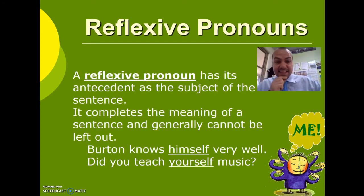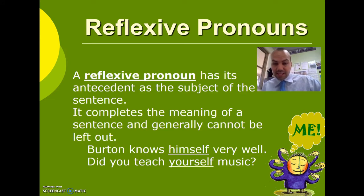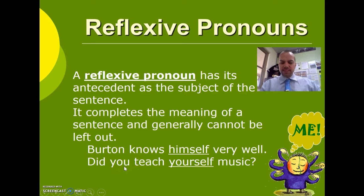A reflexive pronoun has its antecedent as the subject of the sentence. It completes the meaning of a sentence and generally cannot be left out. For example: 'Burton knows himself very well.' Himself is a reflexive pronoun; Burton is the noun or antecedent. 'Did you teach yourself music?' You is the antecedent — you is also a pronoun. Yourself is a reflexive pronoun because it can refer back to another pronoun, in this case 'you.' So these reflexive pronouns don't always refer back to a noun — sometimes they refer to another pronoun.